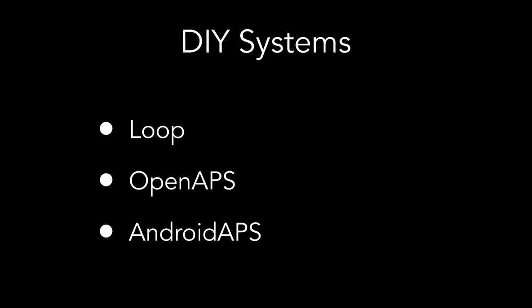And those people did it. They put the CGM data and insulin delivery data together, built the logic chain, and created what we call DIY, or do-it-yourself, looping systems. There are three main ones: Loop, OpenAPS, and AndroidAPS. People said, hey, I might not be a profit center, but I can probably do some of this myself — and they did.